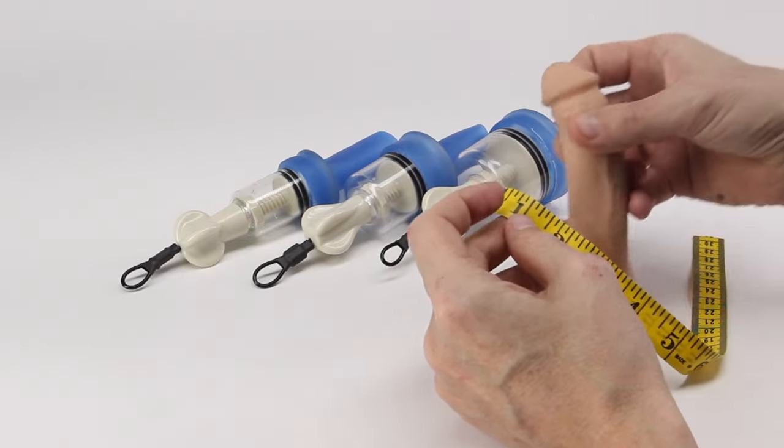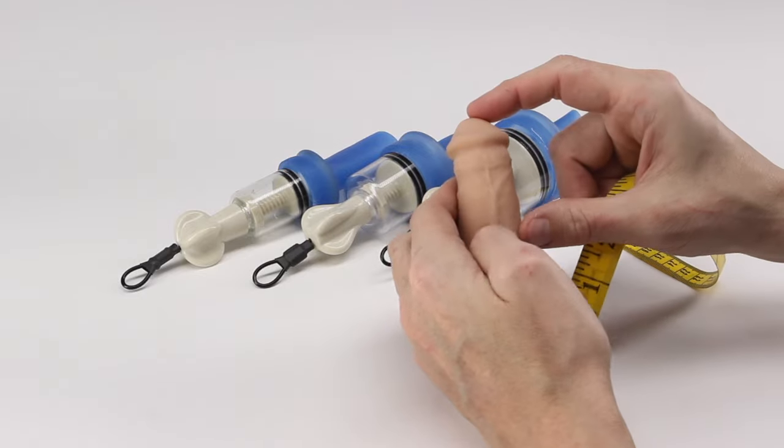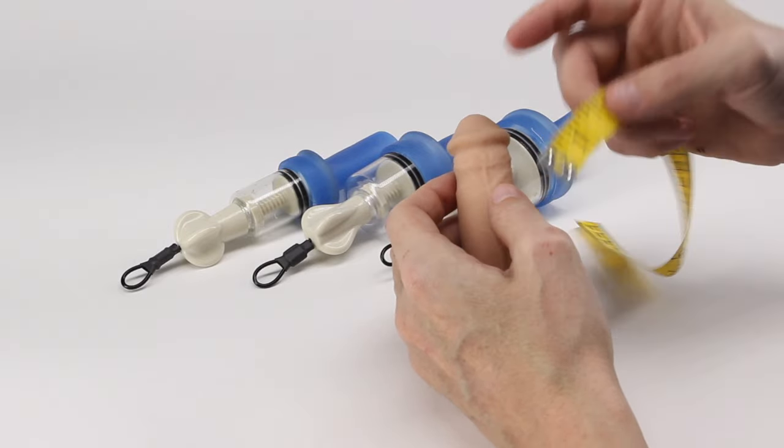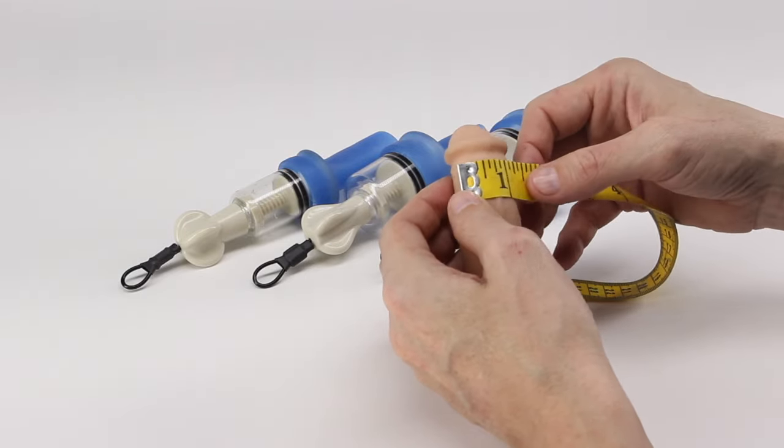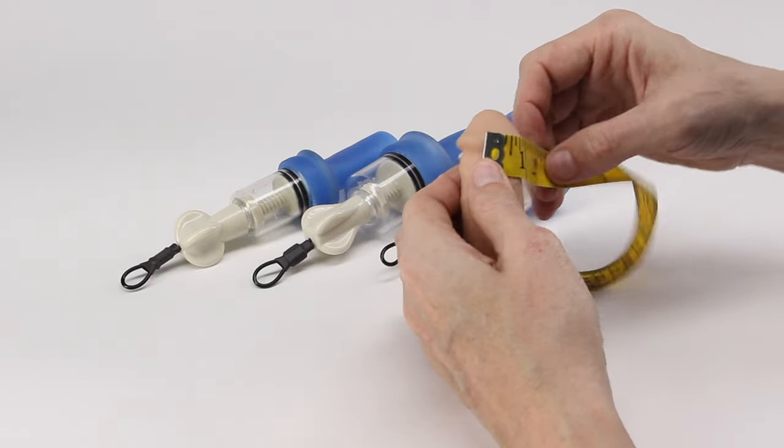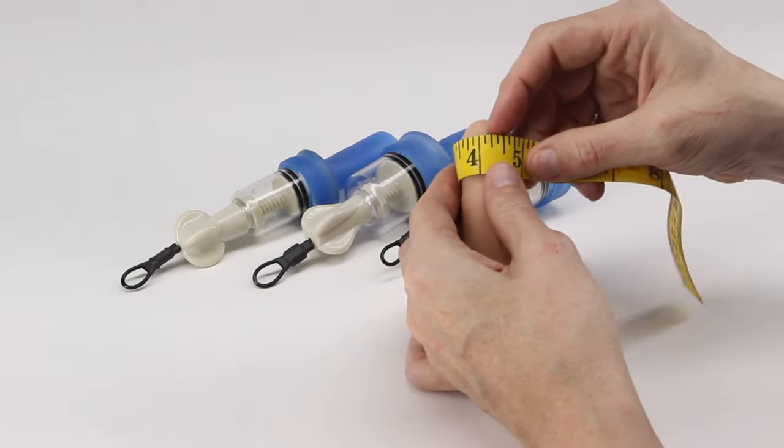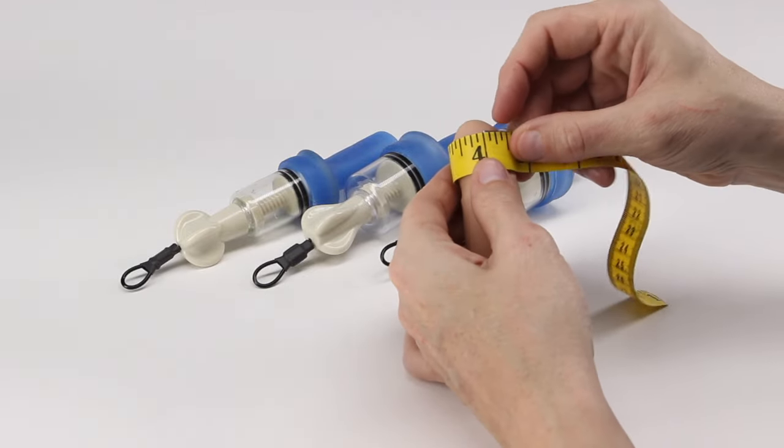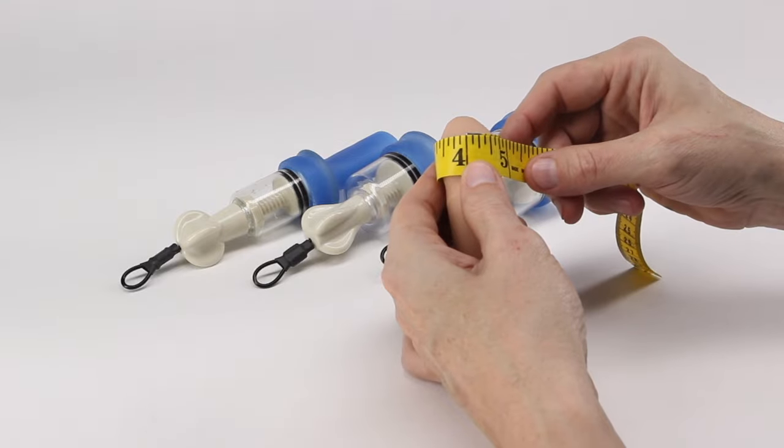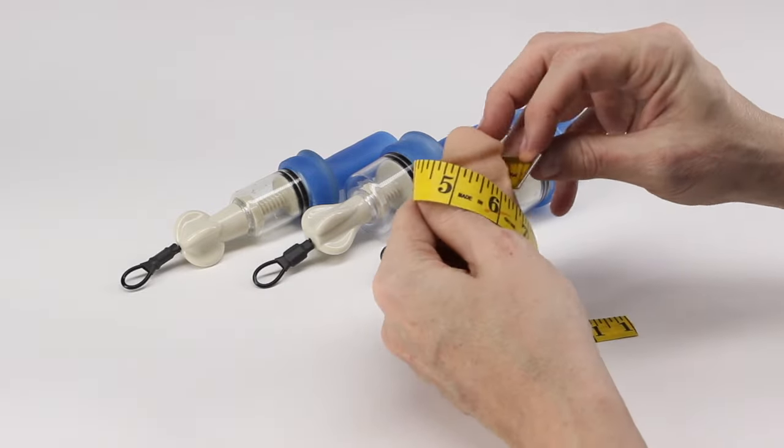You want to measure the upper part of your penis, whatever is thick, let's say the top half of your penis. I'm going to go right around the glans here on this particular penis and this is giving us a four inch measurement up here around the head, around the glans.